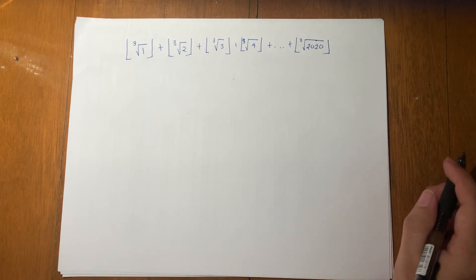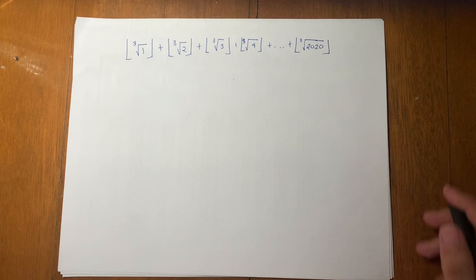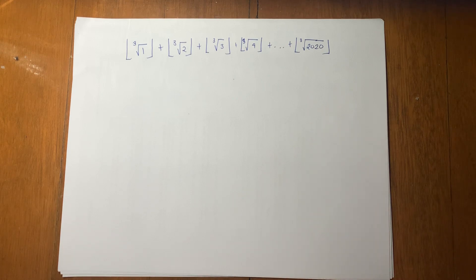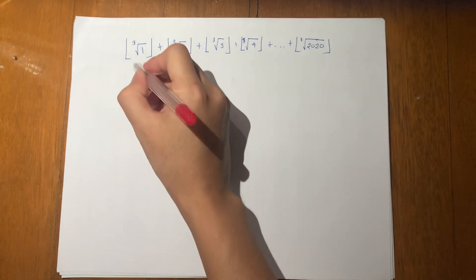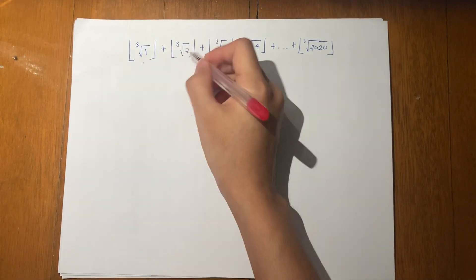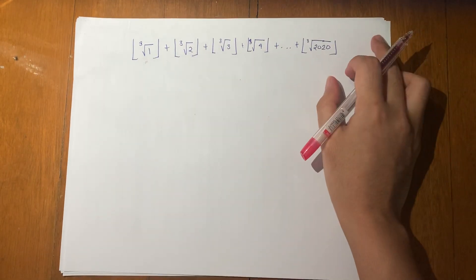Okay, for this problem, our goal is to simplify this sum. Clearly, each of these are integers — this is an integer, this is an integer, and so on.